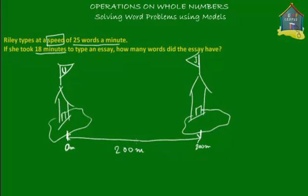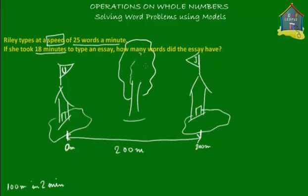You have to go pick up Jane so you can both go to a playground and play. You start from your place at 0 meters, and Jane's place is at 200 meters. You start walking at a speed of 100 meters in 2 minutes. Let's make a landmark — a tree — at the 100 meter mark, which is midway between your house and Jane's house.